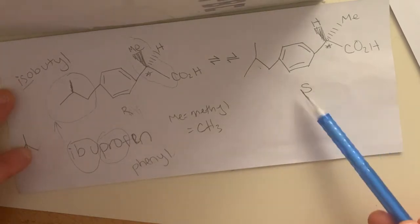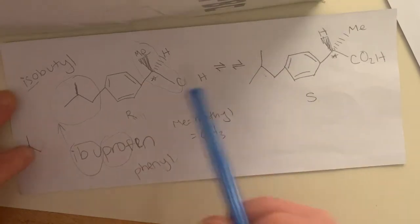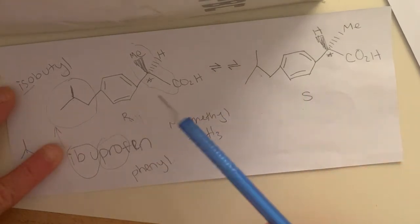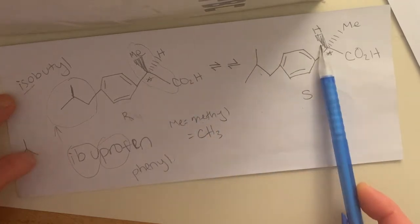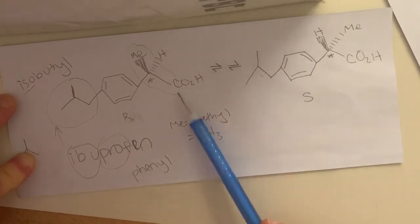But the S-version is the active form. And when you make ibuprofen, like when you synthesize it in the lab or whatever, you get a racemic mixture. So you get a half-and-half mixture of each of these, each of these isomer, these stereoisomers.